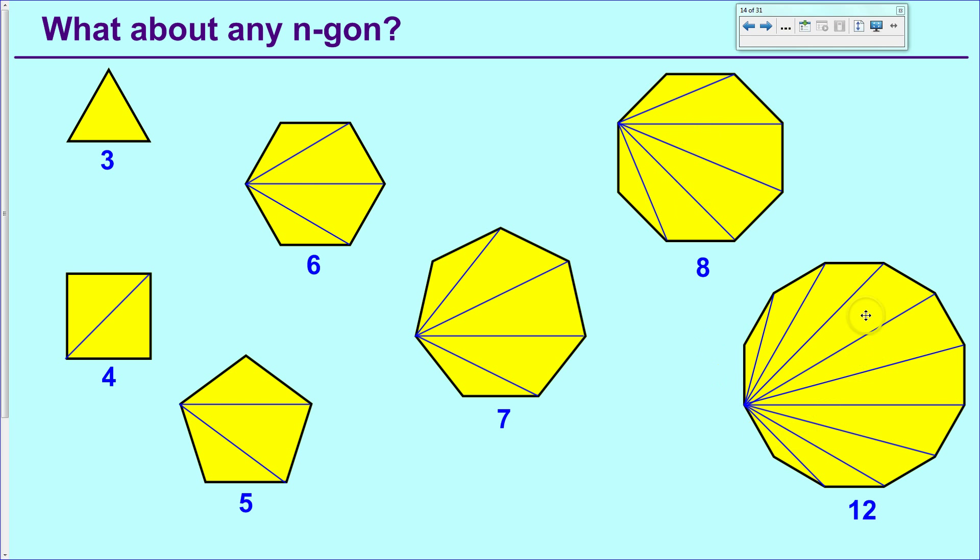And a heptagon is five triangles. Octagon would be six, and I believe this is called a dodecagon. It would have ten triangles in it, which means that if we added up all the interior angles here, we would have 180, two times 180, three times 180, four times 180, five times 180, and on up until we got to ten times 180.